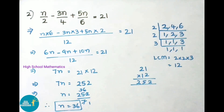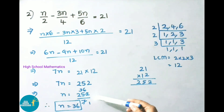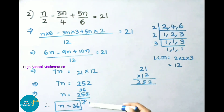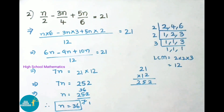Now we have to find the n value. So n = 252 ÷ 7. 7 × 36 = 252. Therefore n = 36.